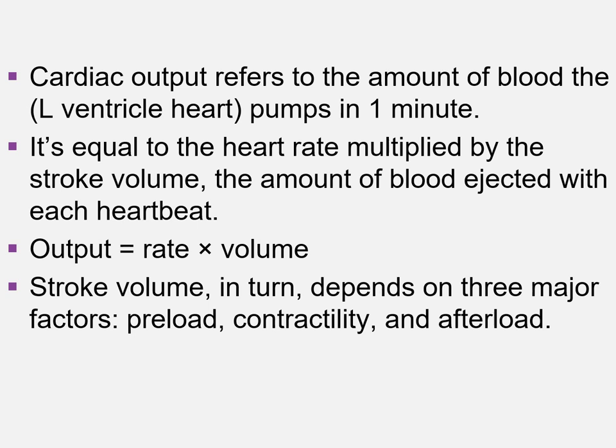Preload is the amount of blood returning to the right side of the heart — the deoxygenated blood coming back from the body. Afterload is the amount of pressure in the aorta and peripheral arteries that the left ventricle has to pump against to get blood out to the body. The ventricle is pumping against systemic blood pressure, referred to as resistance. The peripheral arteries cause the most resistance, which is why the left side of the heart is often the thickest. Contractility is simply the heart's ability to contract.